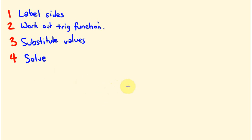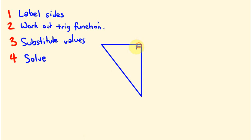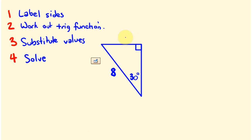So say we had this particular problem here - it's a nice looking problem. It's a triangle, a right-angle triangle - I'll put a little right angle in there. What we have is theta here, which is going to be 30 degrees. We know the side here, which is 8, and I wish to know the opposite side here, which I'm going to call x. So how do we solve this? First off, we have to label our sides.